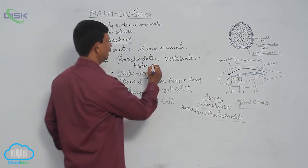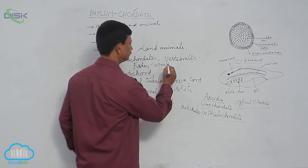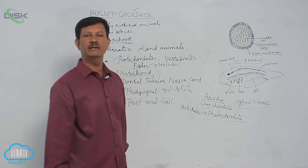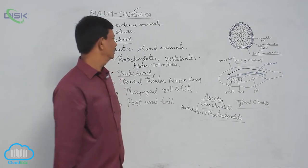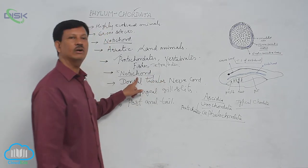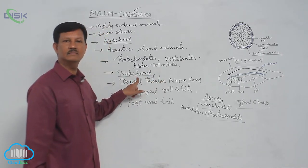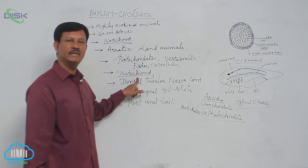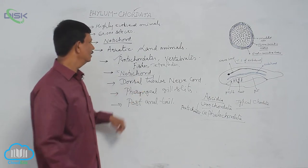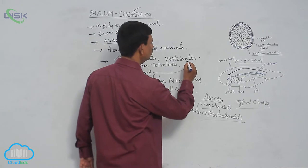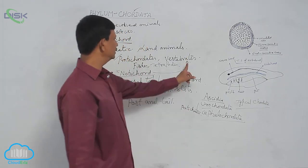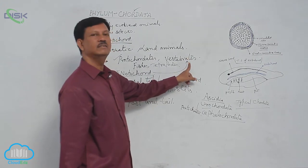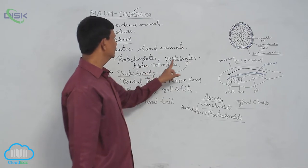In fishes and tetrapods — for example, Amphibia, Reptilia, Aves, and Mammals — these animals possess notochord only in the embryonic condition. Notochord is found only in the embryonic condition. When they become adults, notochord is replaced into the vertebral column. That is why they are known as vertebrates.